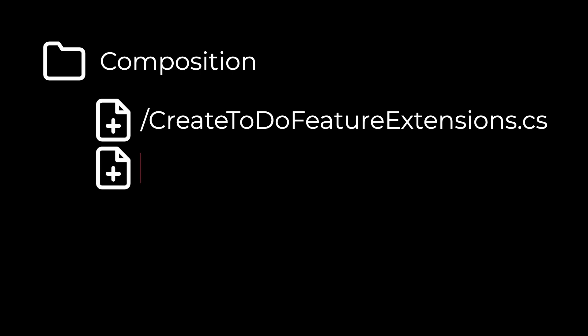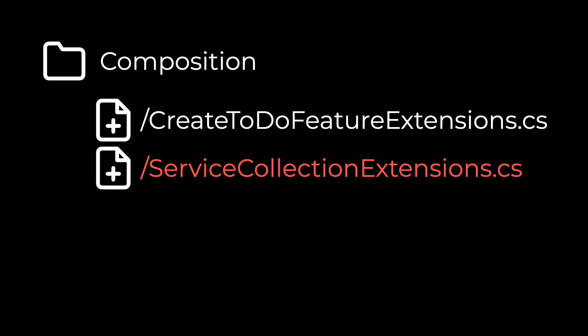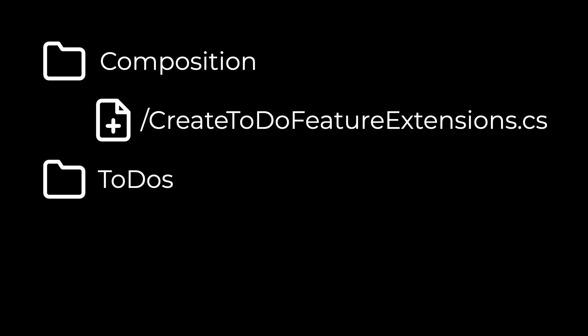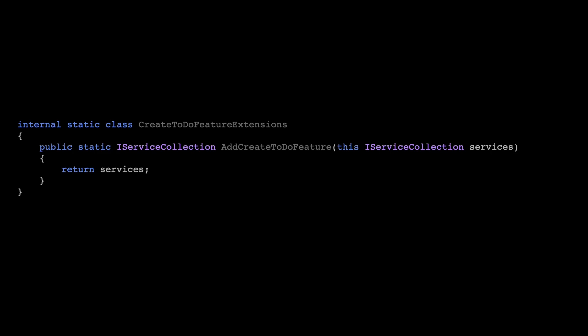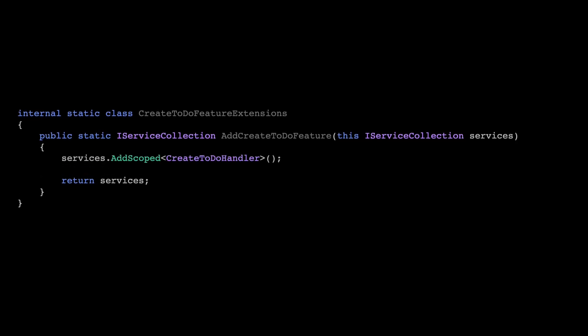Why don't I create a single file like 'ServiceCollectionExtensions'? Because in that case, I would just be moving all the code from program.cs into there — that's not my goal. My goal is that when I need to change something on a given feature, I know exactly which file to go to. And if I want to understand what that feature is using, it's all mapped out in that single file. So once I have the file, let's create an extension method to the service collection with a meaningful name, and start bringing the configurations into our extension method.